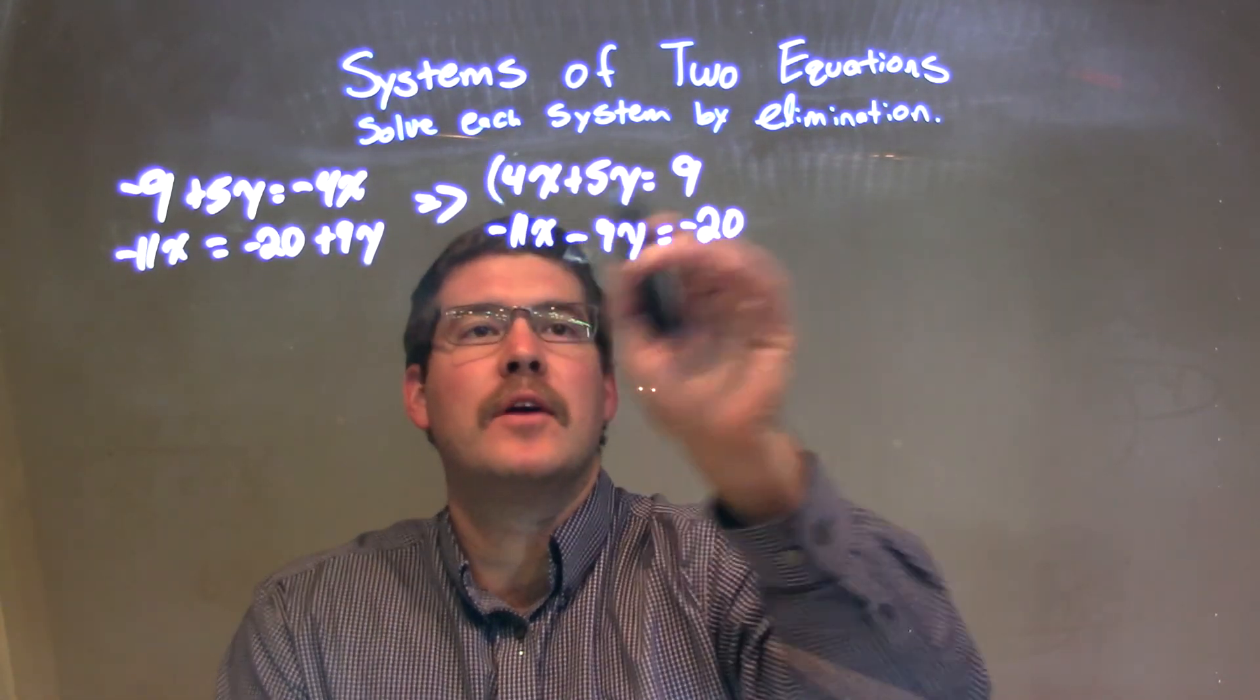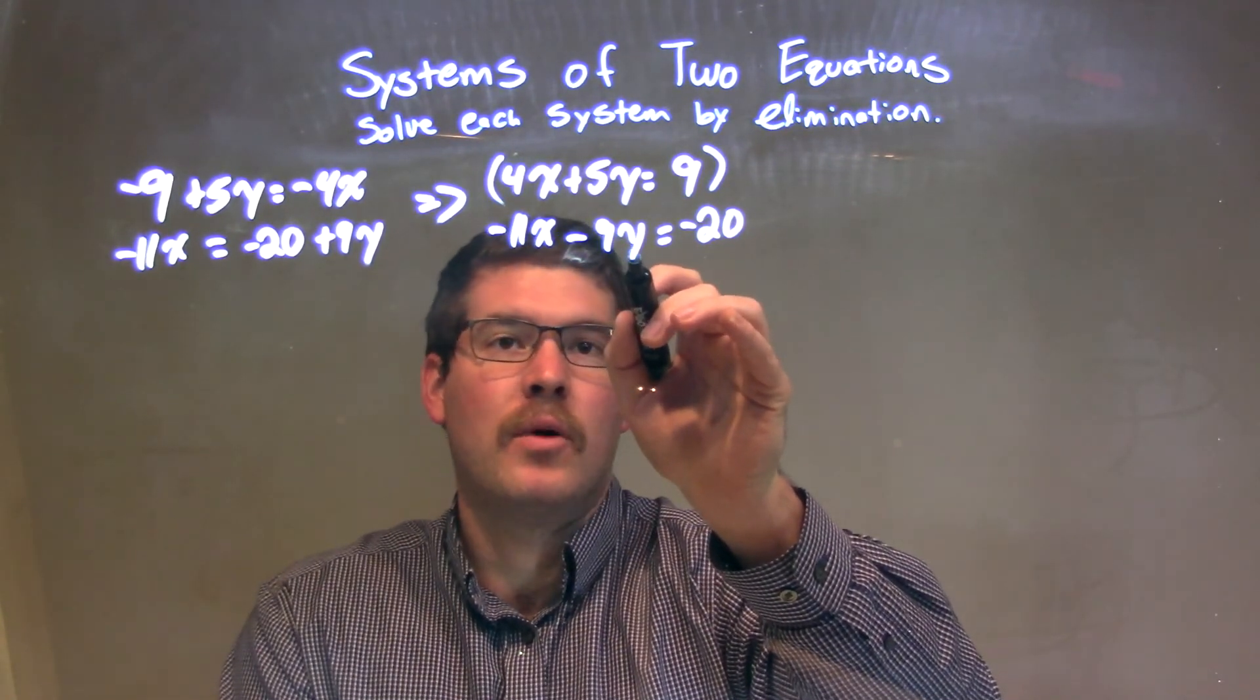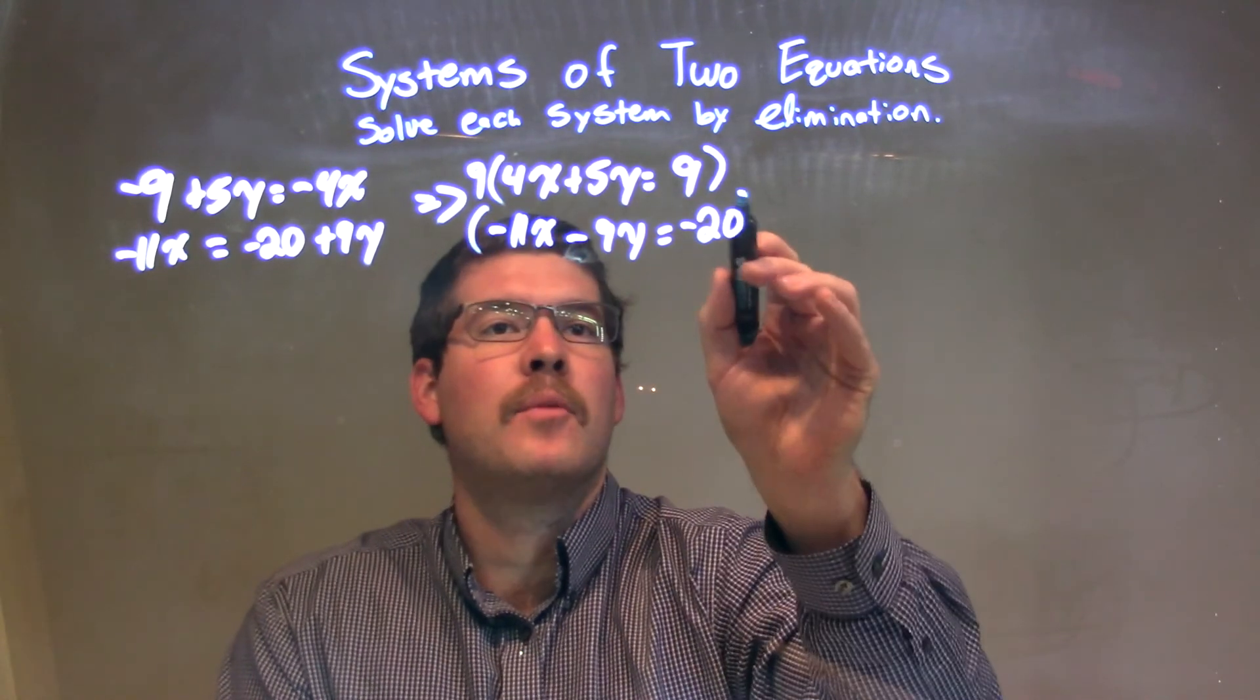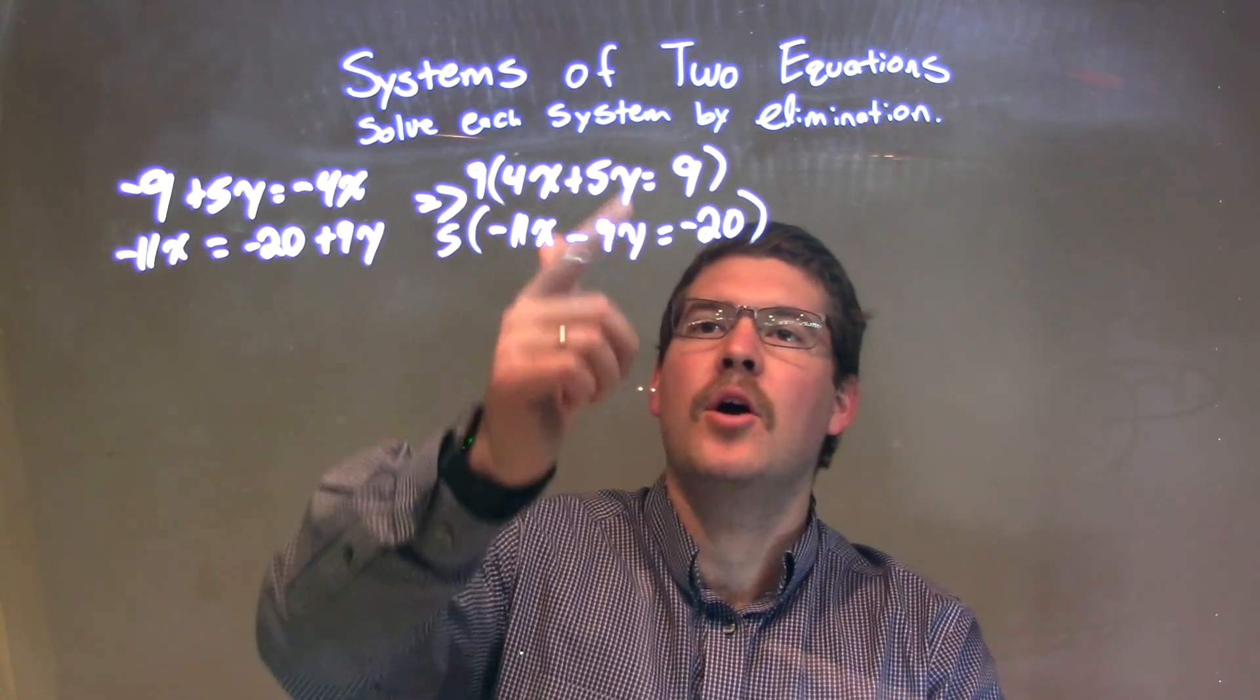I'm going to multiply the top equation by the coefficient in front of this y, which is 9, so multiply the top one by 9 and the bottom one by 5. That will help eliminate this variable.